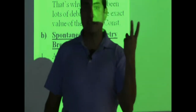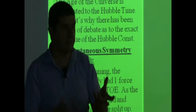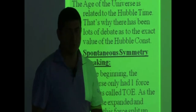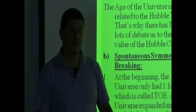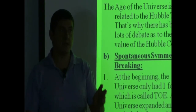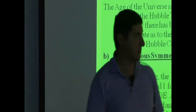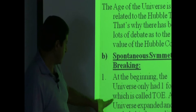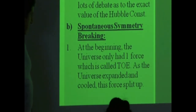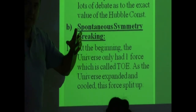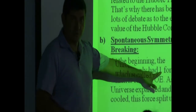String theory is one model that tries to explain the theory of everything, tries to understand the nature of that mother force. To date, it's not completely agreed upon. There are some scientists saying we should dump string theory and go make a new theory of everything. At the beginning, the universe only had one force — the Theory of Everything — and as the universe cooled, this one mother force started splitting.